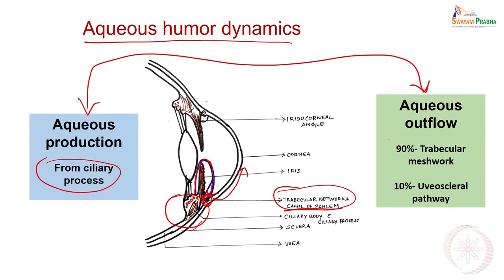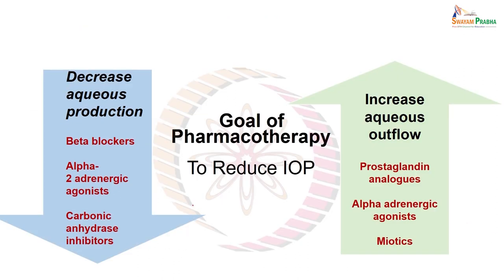This 90% drains via the trabecular/canal of Schlemm pathway, and 10% is the uveoscleral pathway. The goal of pharmacotherapy for increased intraocular pressure or glaucoma is to reduce intraocular pressure. The intraocular pressure reduction can follow two strategies: decrease aqueous humor production or increase outflow.